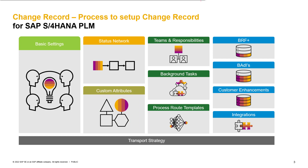The next three topics are all about the process route. First, you need to think about teams and responsibilities. Is it enough to only assign workflow items to specific users or already existing HR entities? Or do you need to set up special teams, sub-teams, and functions with the Teams and Responsibilities app?